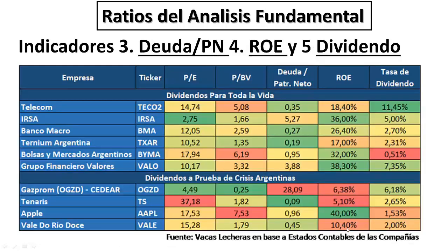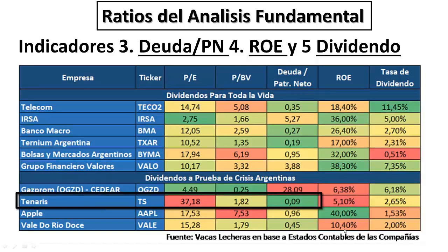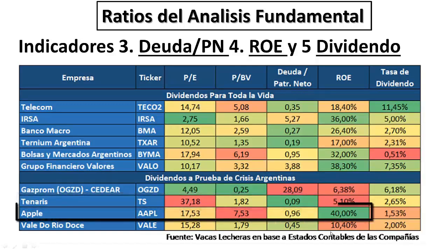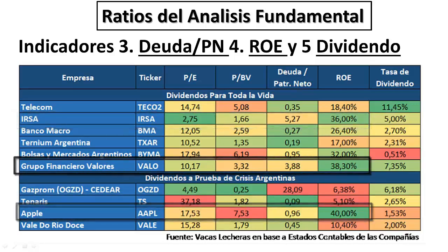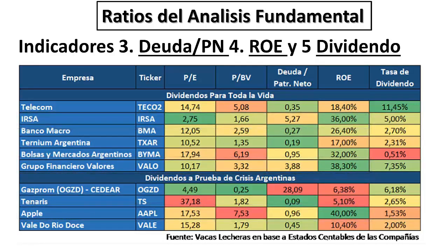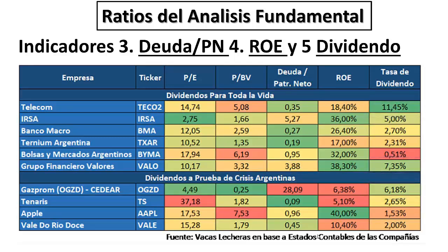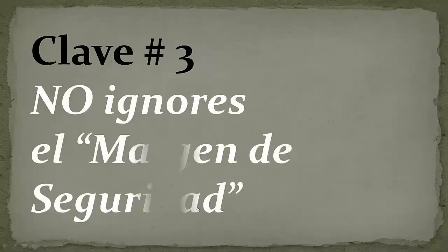En términos del indicador de deuda, la acción más barata es Tenaris. Si miramos el ROE, las de mejor resultado son Apple, Valo e IRSA. Y si nos basamos en la tasa de dividendo, algo que constituye un factor clave en esta estrategia, los que presentan los mejores números son Teco, Valo y Gazprom.